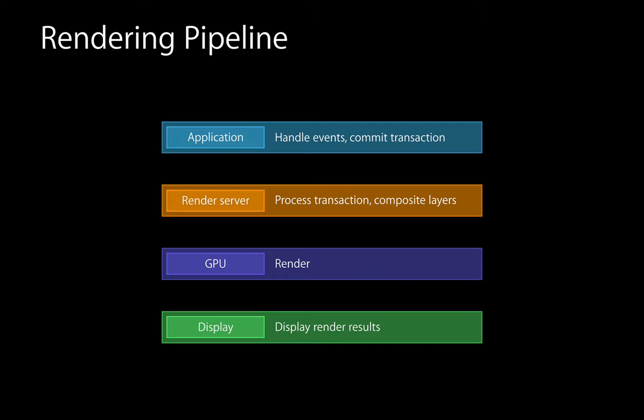Next I'd like to talk about UI Visual Effect View. Before that, let's spend a couple of minutes on how we render things on iOS, because some of these APIs can have a dramatic effect on rendering performance. There are largely four steps to render content: we give your app a chance to handle events and commit a transaction to the render server. The render server processes that transaction, does more work, composites layers handed off to the GPU, and the GPU renders those and hands off to the display.